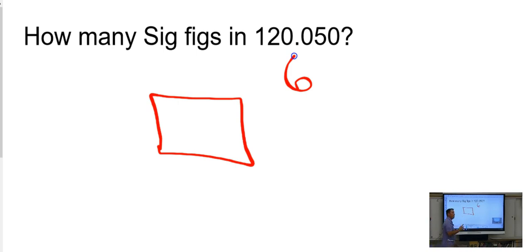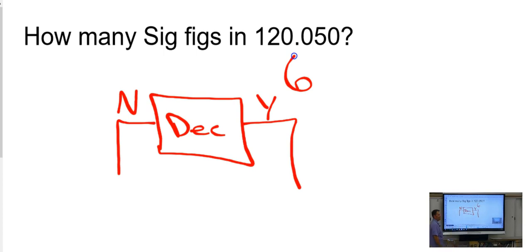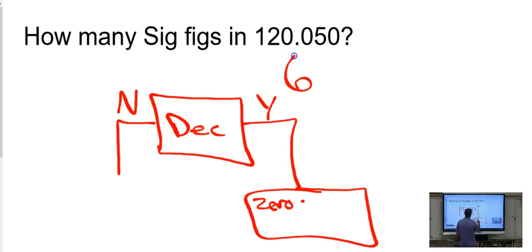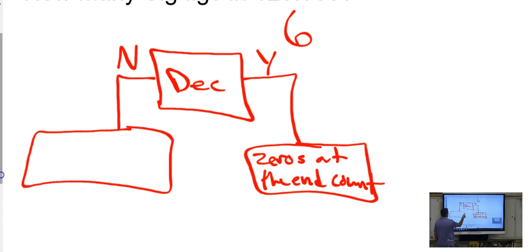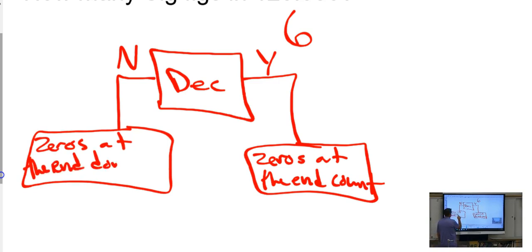Okay, here we go. Here's a little flow chart. That means: is there a decimal in the number? That's what that's shorthand for. Yes — do zeroes at the end count? If the answer's no, zeroes at the end don't count. Does zeroes at the start of a number ever matter? Never, ever, ever. So we don't have to worry about that. And then anything that's not a zero, that always counts.